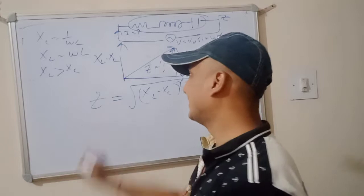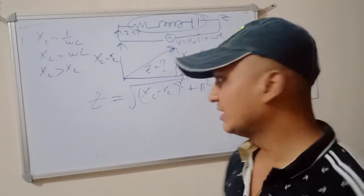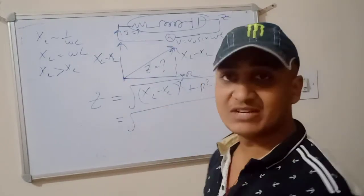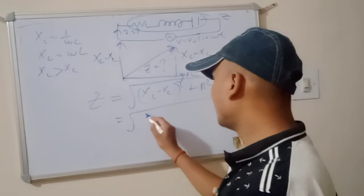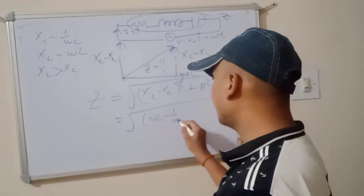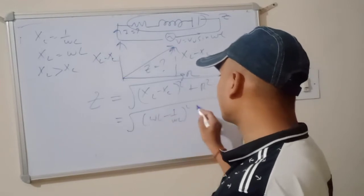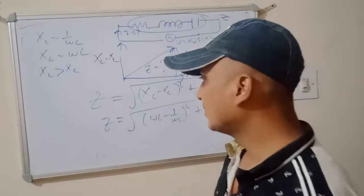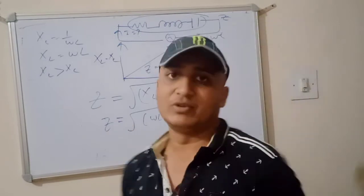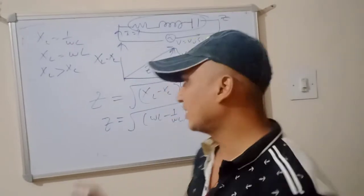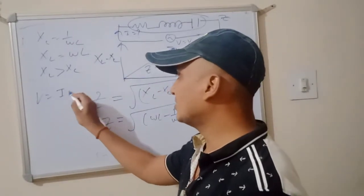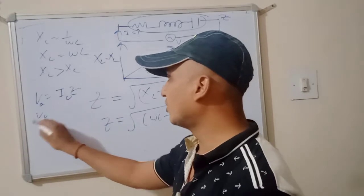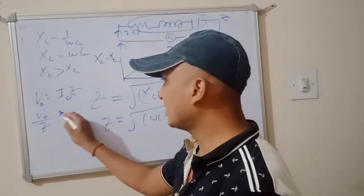So our impedance Z equals the square root of (omega-L minus 1 upon omega-C) squared plus R squared. Now we want the current. We know V equals IZ, so V-naught equals I-naught times Z, therefore I-naught equals V-naught divided by Z.